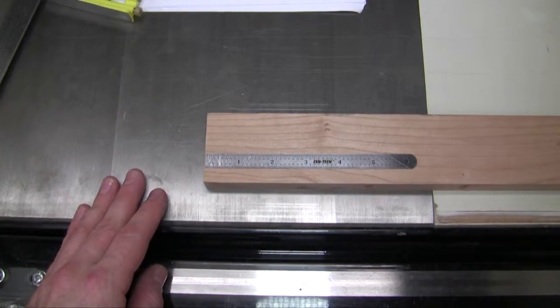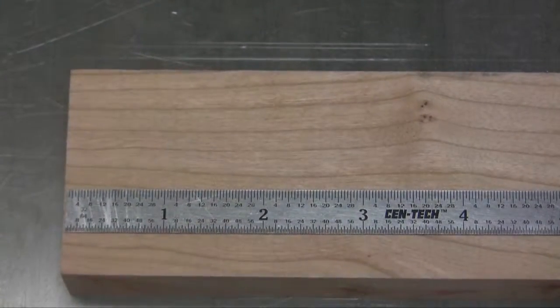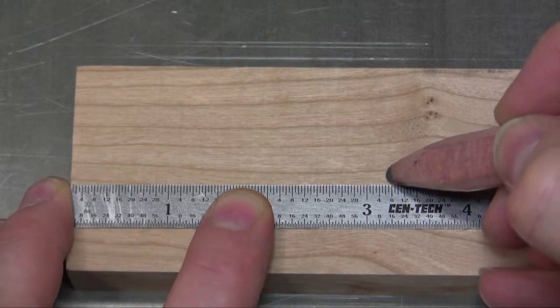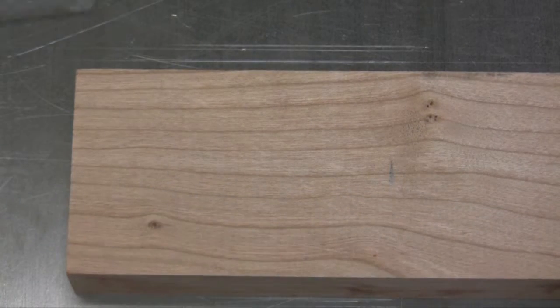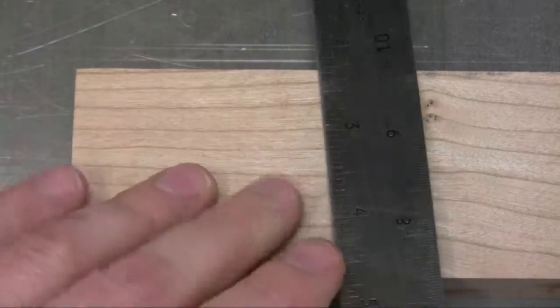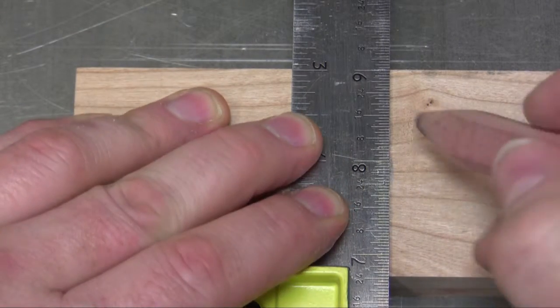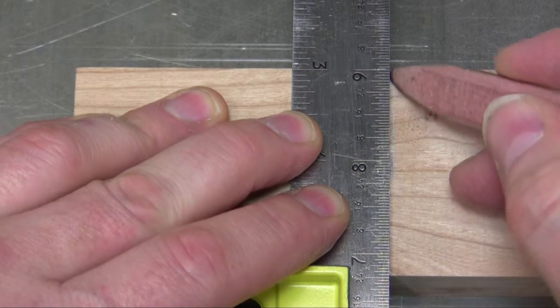Now on that back surface, we want to make a mark three and a quarter inches across the neck. Use a combination square or any similar square to make that mark, go all the way across.